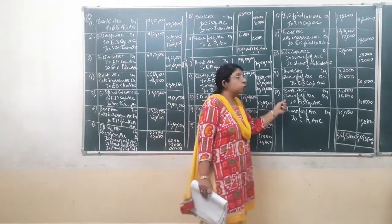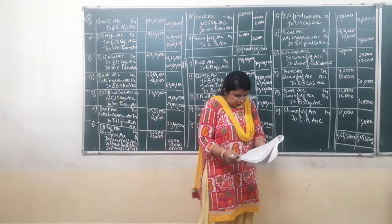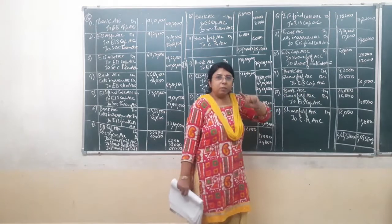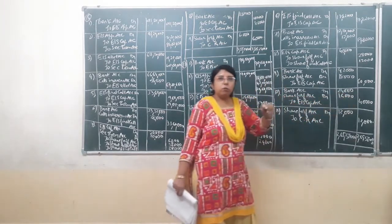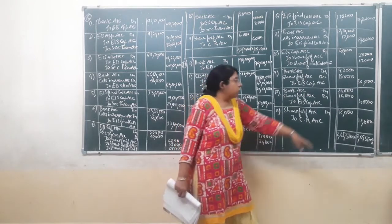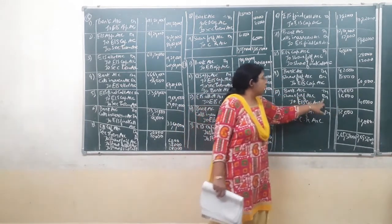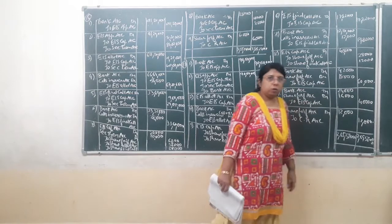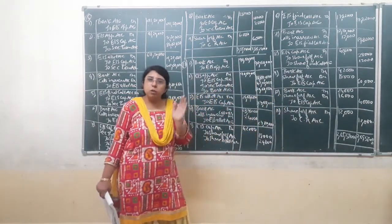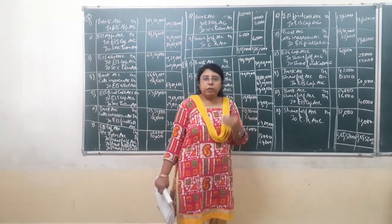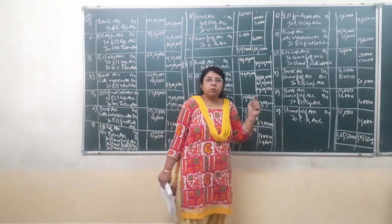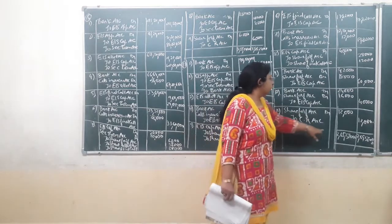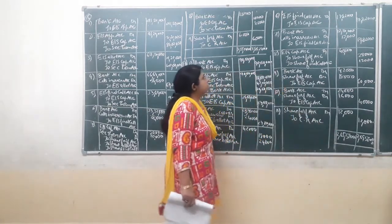The next journal entry is for reissue of 4,000 shares of JSA, issued at Rs. 6 per share. Bank account is debited for 4,000 multiplied by Rs. 6, coming to Rs. 24,000. The amount of discount is Rs. 4 per share, so 4,000 into Rs. 4 comes to Rs. 16,000. Share forfeiture account is debited by Rs. 16,000, and equity share capital account is credited by Rs. 40,000. After completing all journal entries for all installments due and received, forfeiture, and reissue of shares, the last step is the transfer of the balance of share forfeiture to capital reserve.